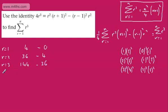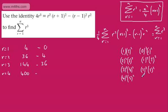For r equals 4: the first part gives 4 squared times 5 squared, which is 16 times 25 equals 400. Substituting into the second part gives 3 squared times 4 squared, which is 144. We can certainly show the first three or four terms, then continue with dots.